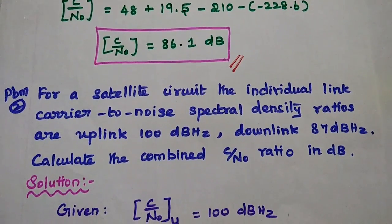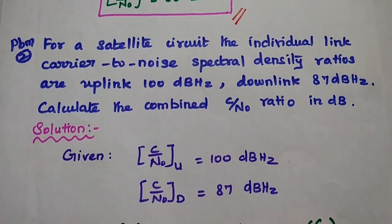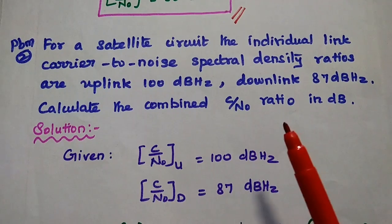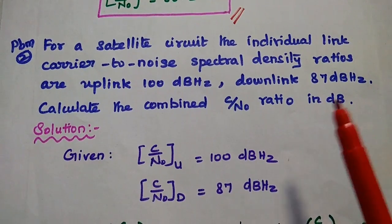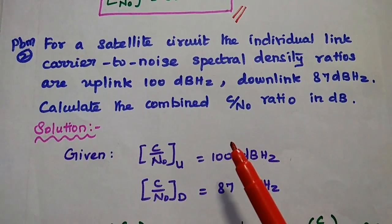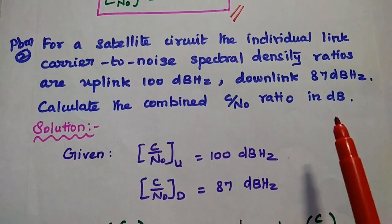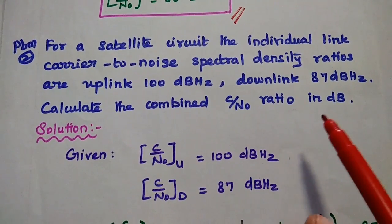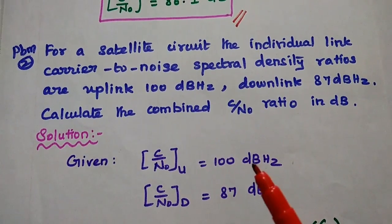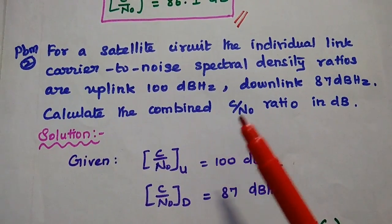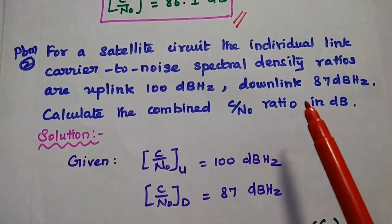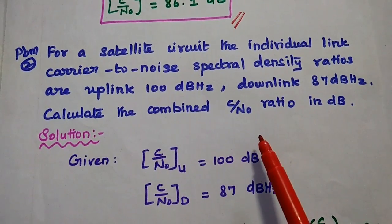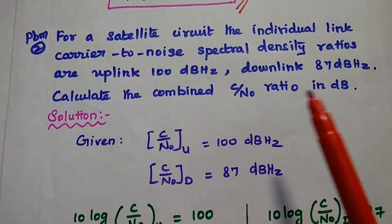The next problem is a very important one. For a satellite circuit, the individual link carrier-to-noise spectral density ratios are: uplink 100 dBHz and downlink 87 dBHz. Calculate the combined C/N ratio in dB. In this problem, uplink and downlink ratios are given, and we are going to find the combined C/N ratio by combining these two values.